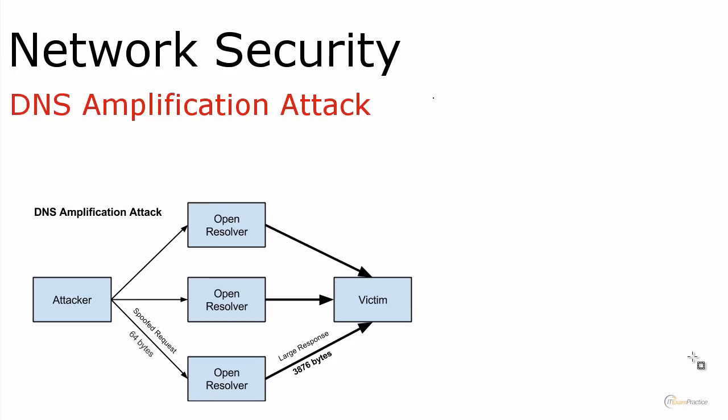The idea behind this attack is to send as many packets as possible to the victim, shown on the right-hand side. To make it happen, there are two things you need to do. First, you spoof the source IP address. The attacker pretends to be the victim and sends a DNS query — for example, 'what is the IP address of test.com?'